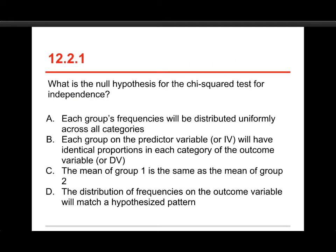The first question on this quiz is, what is the null hypothesis for the chi-squared test for independence? The choices are A, each group's frequencies will be distributed uniformly across all categories, or B, each group on the predictor variable or IV will have identical proportions in each category on the outcome variable or DV.